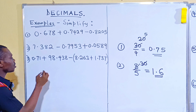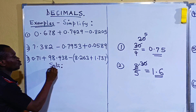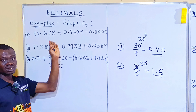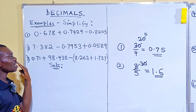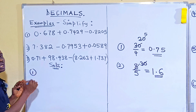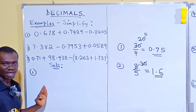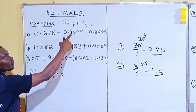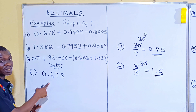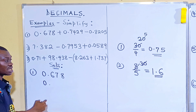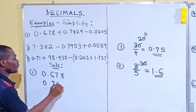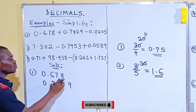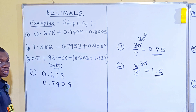Simplify the following. When it comes to addition and subtraction, you are expected to know how to arrange them. The process is the same as normal numbers — just the arrangement. The pattern only allows you to arrange from the decimal points. So I have 0.678. If I want to put this under it, I start from the decimal point. Your decimal points must be on a single line.